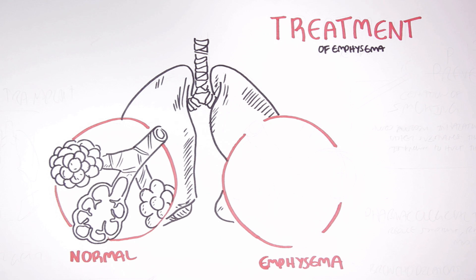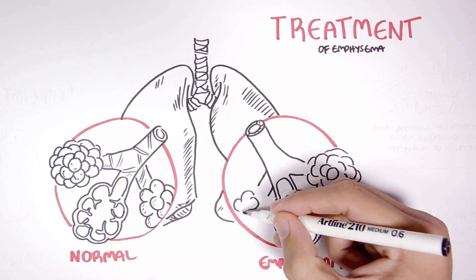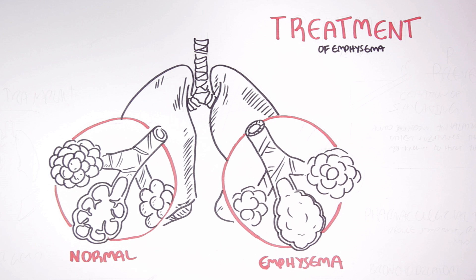Alveoli with emphysema, on the other hand, are damaged. The walls are damaged, the elastic fibers are lost, and this makes breathing difficult and uncomfortable.